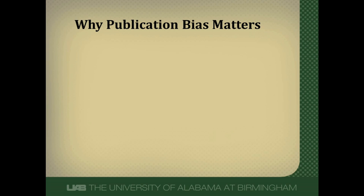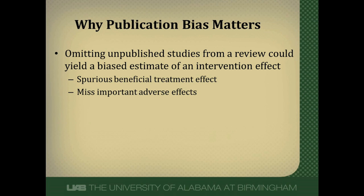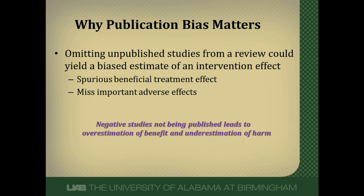Why does publication bias matter? The reason we do a systematic review is to understand the totality of the evidence on a given topic. If publication bias exists and studies that aren't positive are suppressed or not published as much, we won't be able to see the totality of the evidence. This leads to a biased estimate of the effect of an intervention or diagnostic test, and can produce spurious beneficial treatment effects, overestimates of diagnostic benefit, and missed important adverse effects. In general, negative studies not being published leads to an overestimate of benefit and an underestimate of harm.